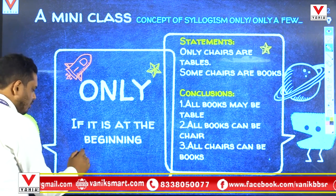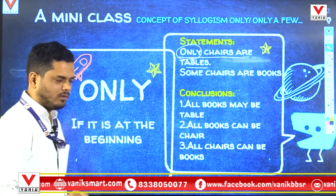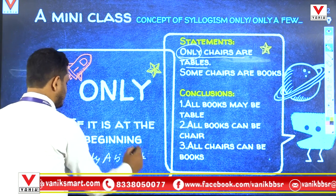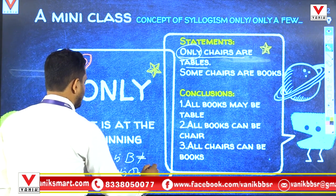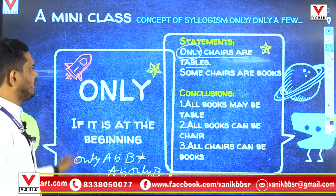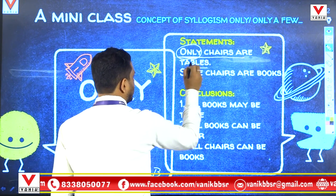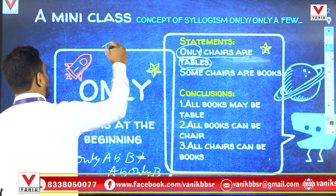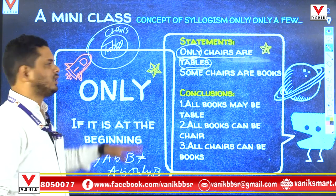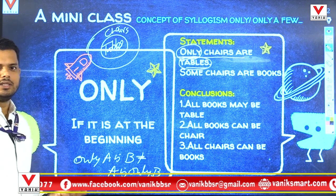'Only' may be used in the first part of the sentence. For example, 'only chairs are tables' — here 'only' is used at the very beginning of the sentence. This is not the same as 'A is only B.' They are both very different from each other. If 'only' is used in the beginning of the sentence, then the second part becomes 'all.' The second part is 'table,' so table becomes the 'all' part of chairs. But we cannot treat this simply as 'all.'